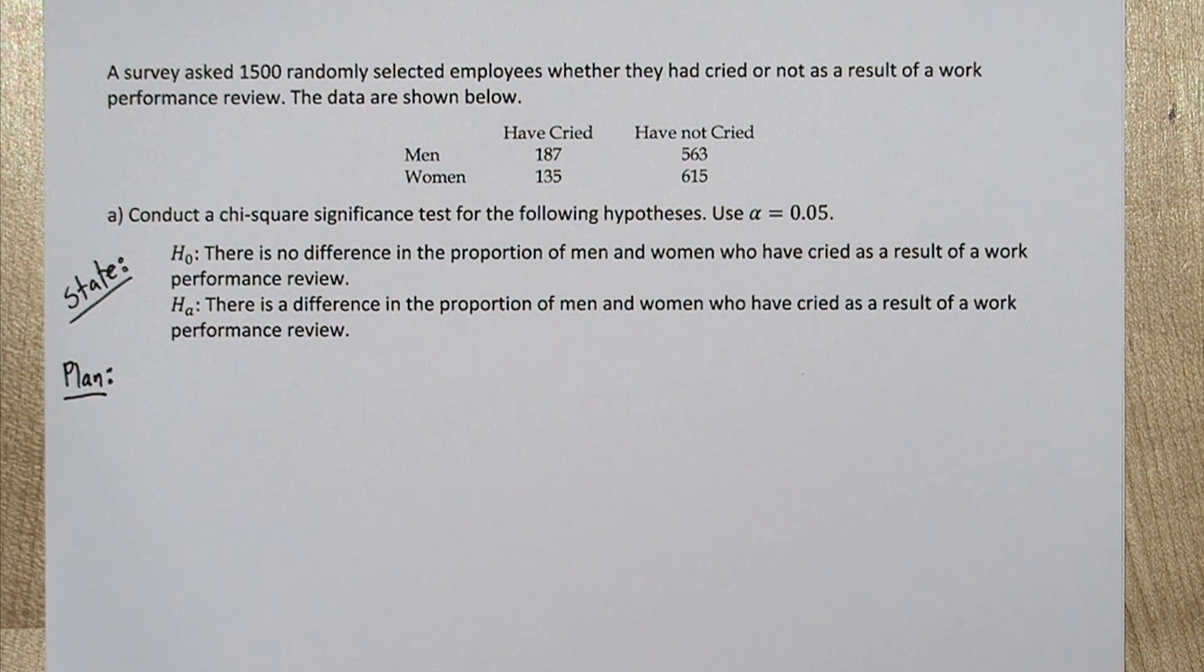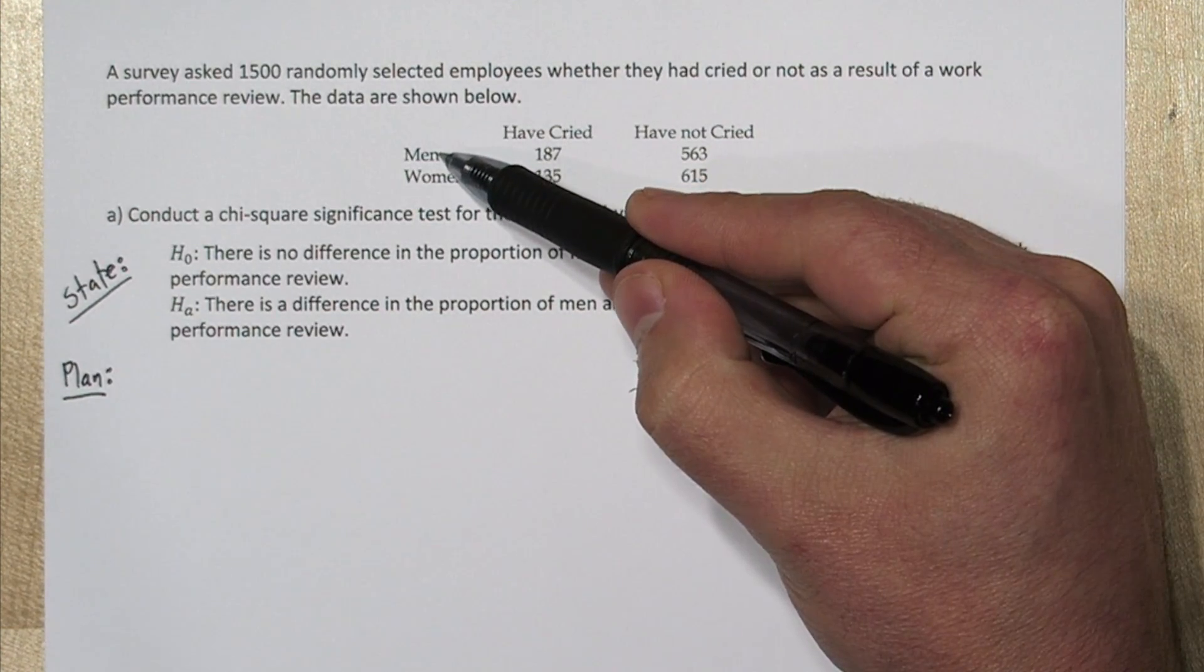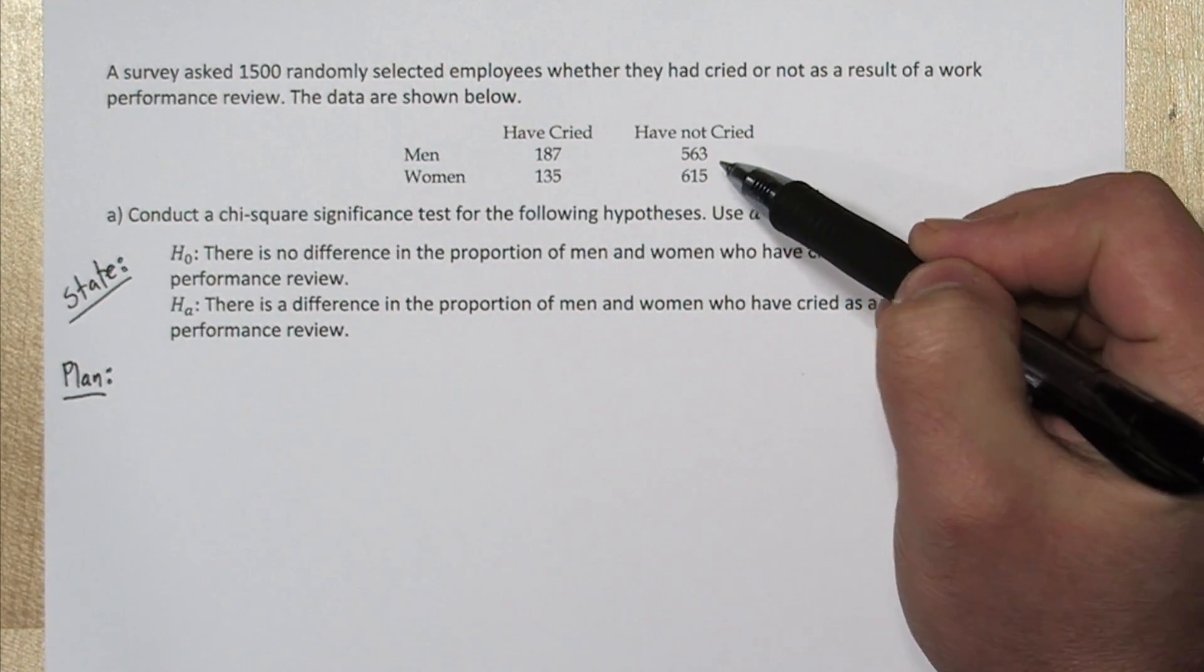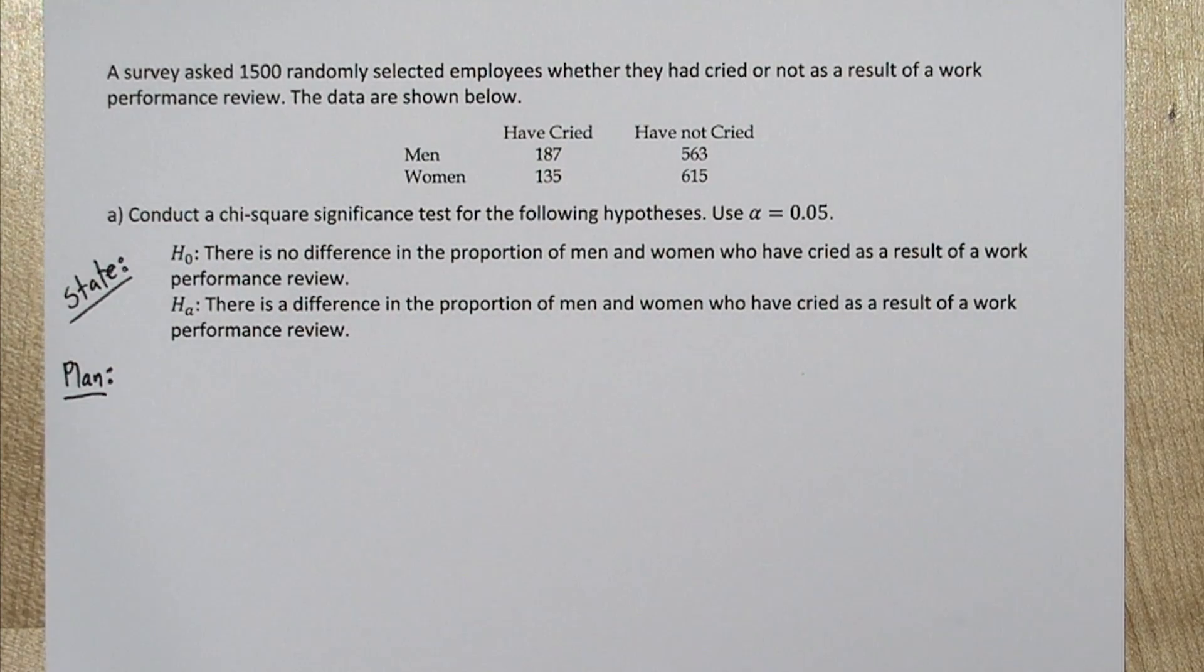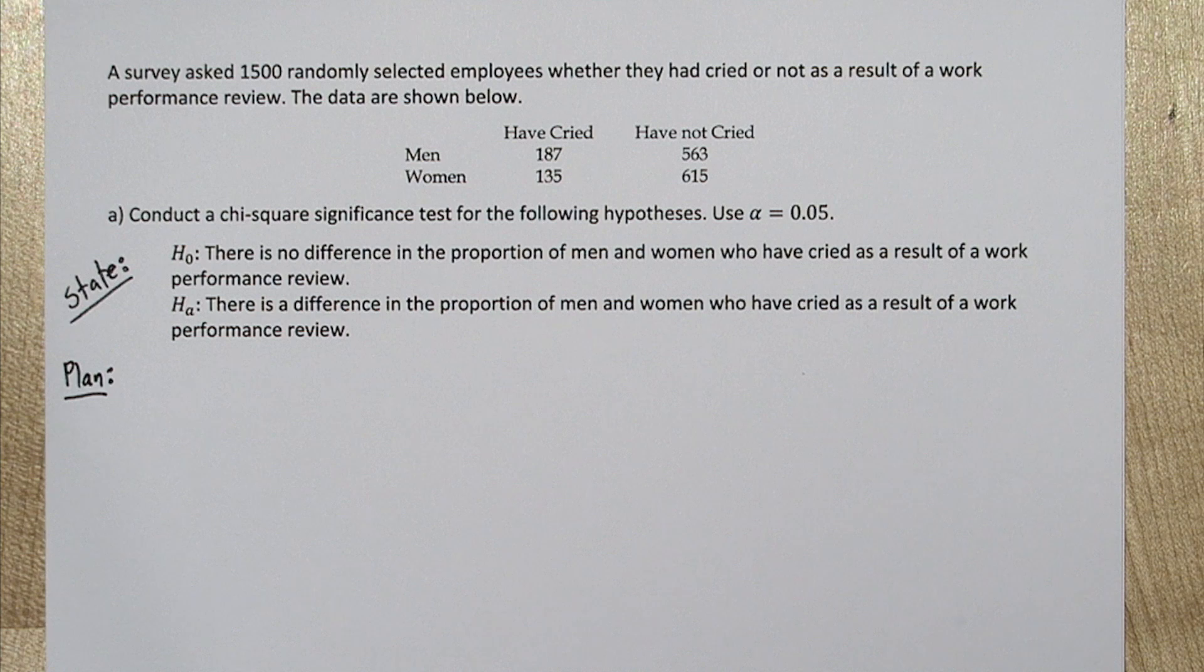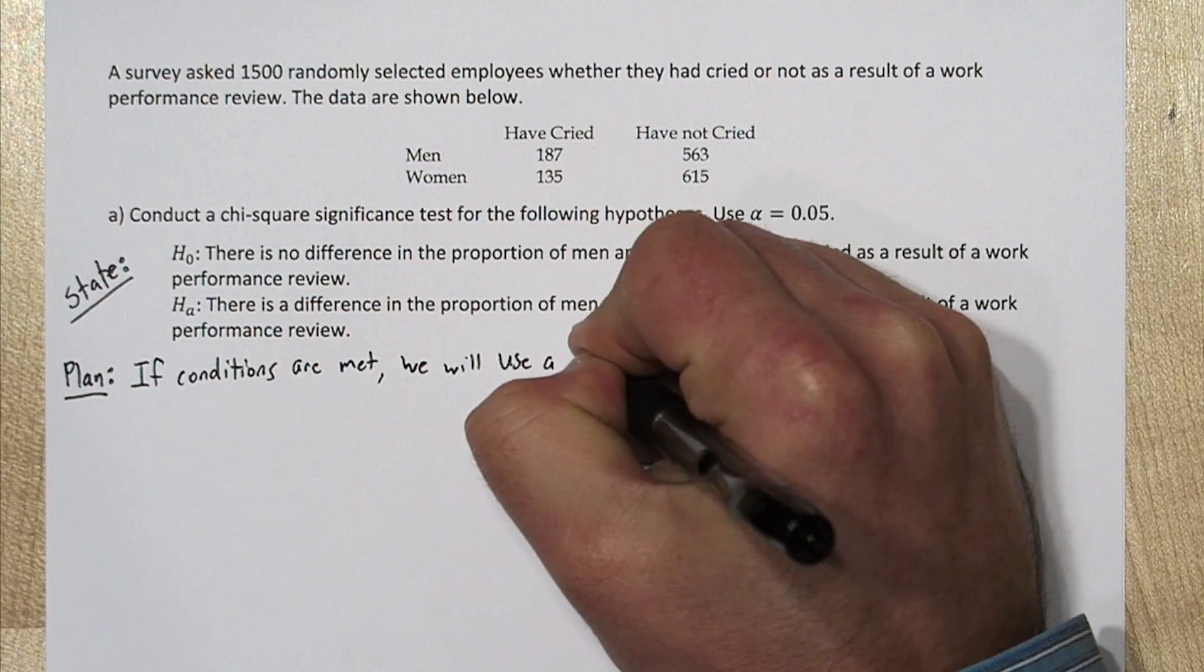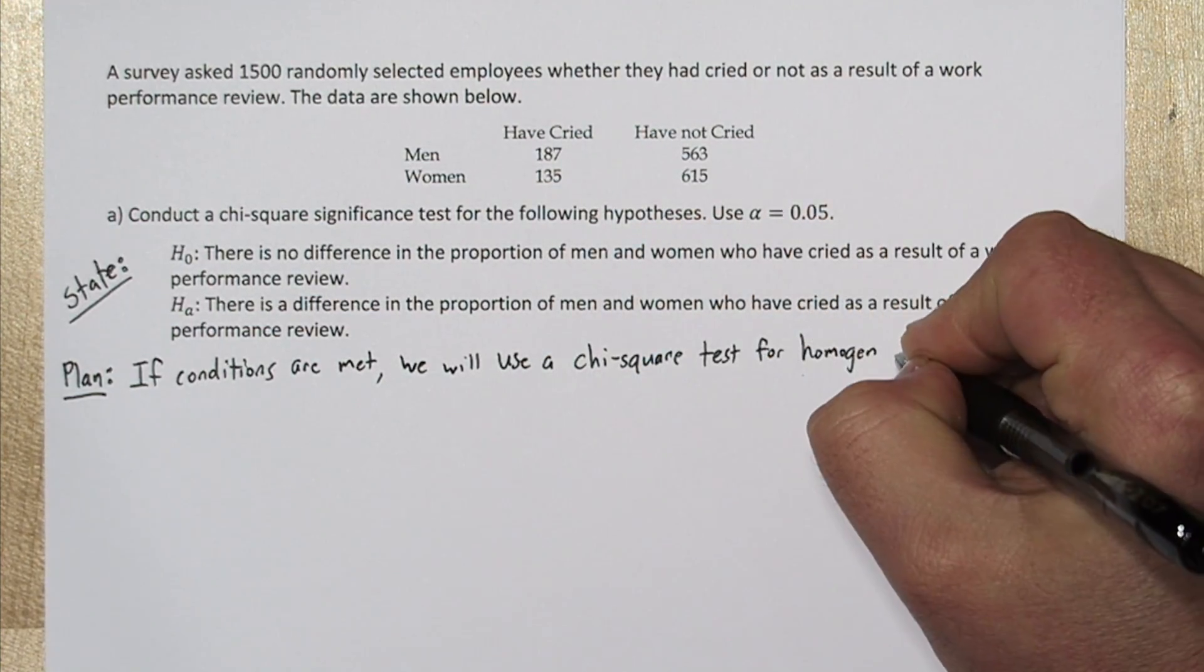We know it's homogeneity because we have these two separate populations that we're comparing. It looks like 750 surveys were administered to male employees, and 750 surveys were administered to female employees. And we're using this sample data to determine if there's evidence that these two populations are different in how they feel about this categorical variable, have cried and have not cried, as a result of a performance review.